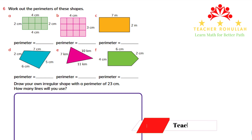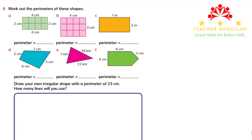Hello and welcome to today's lesson. In this lesson, I'm going to work on question six of exercise 6.2 of Cambridge Primary Mathematics Learner's Book Three. This exercise is about measurement, area and perimeter, and the question we are working on is about perimeters. We have six shapes here, which are shapes A to F.